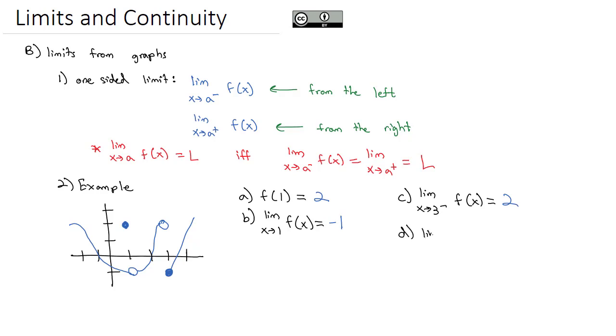But look what happens when we take the limit as x goes to 3 from the right of our function. If I'm coming in from positive infinity, we see the graph comes down closer and closer to 3, and the y value there is getting closer and closer to negative 1. That equals negative 1.